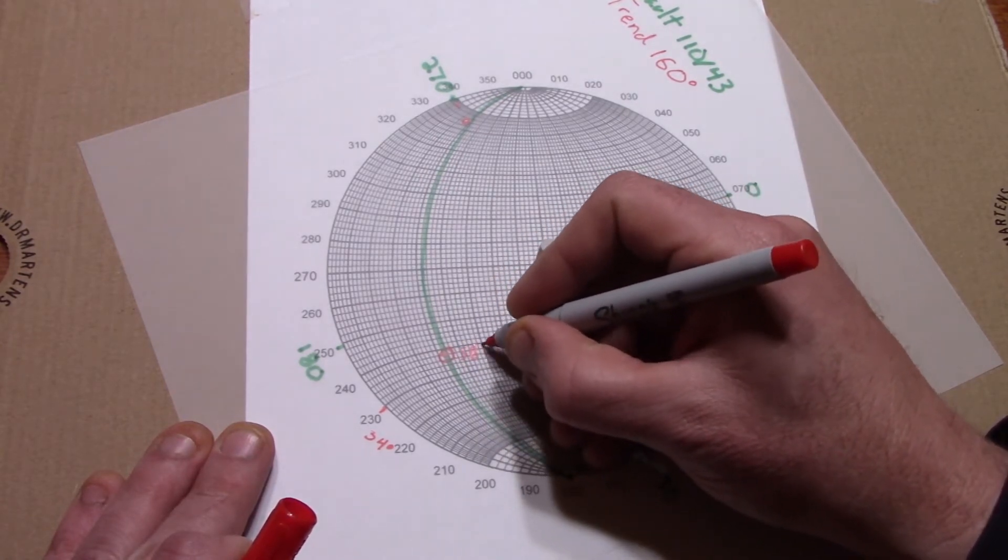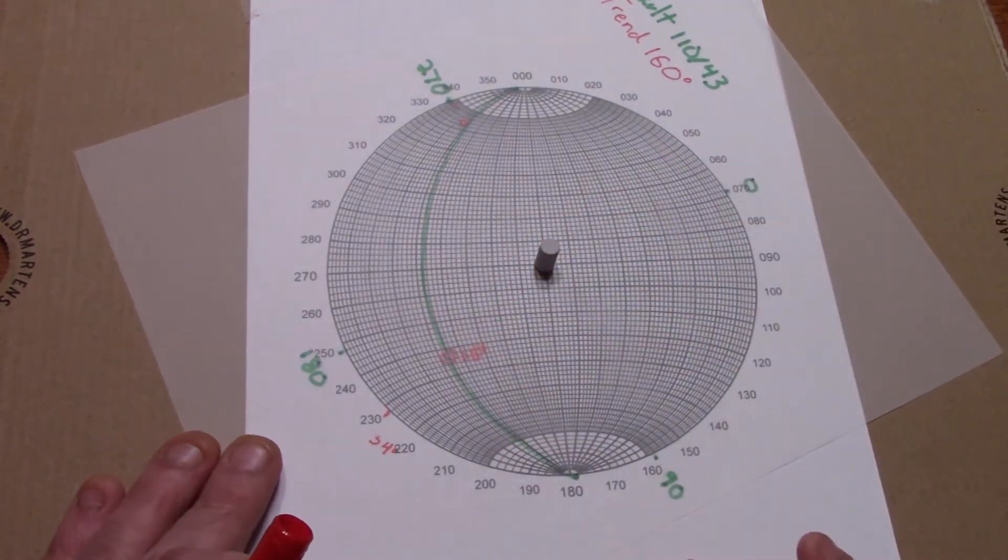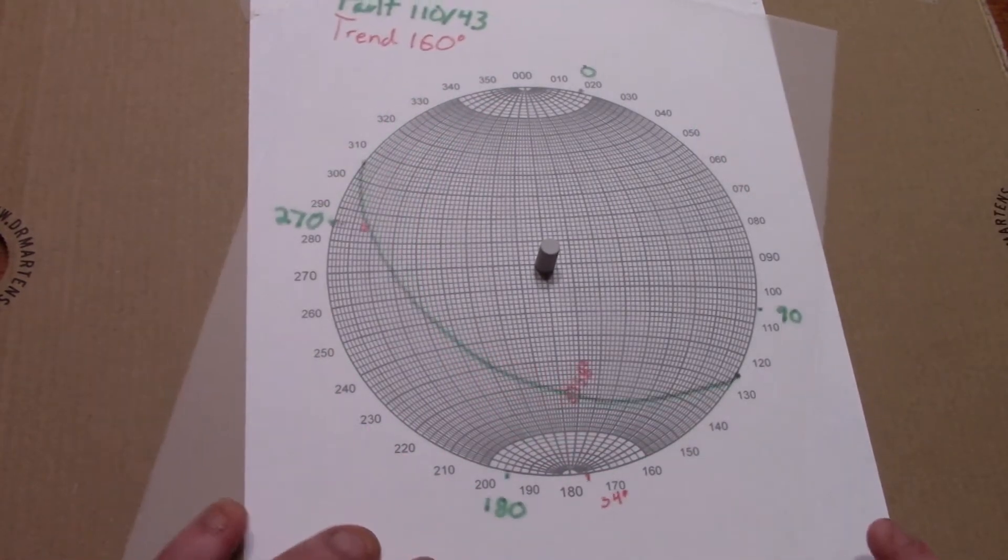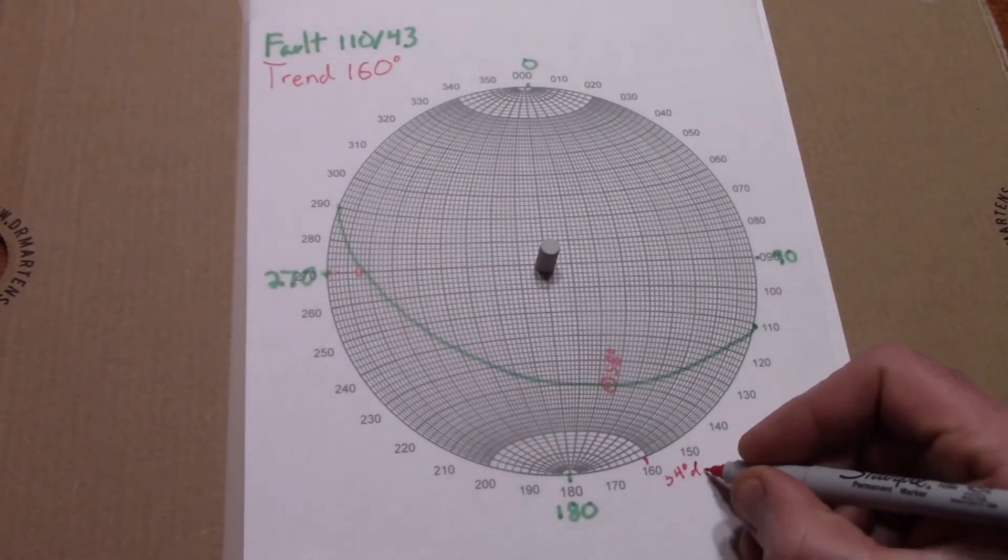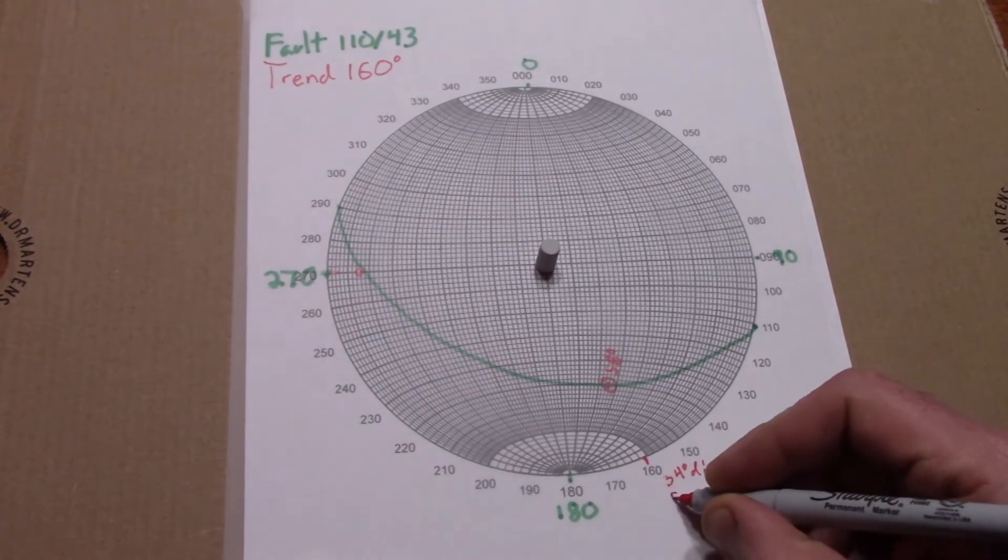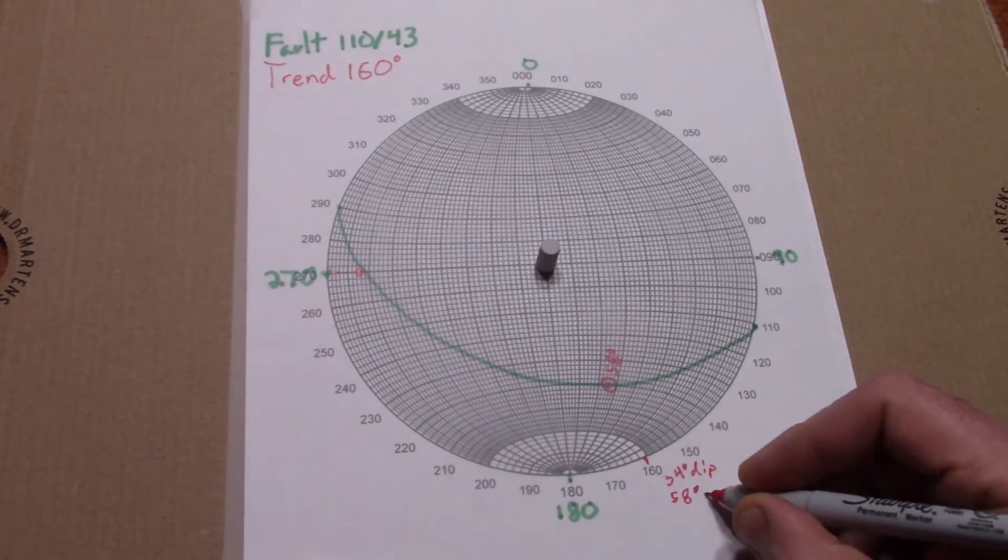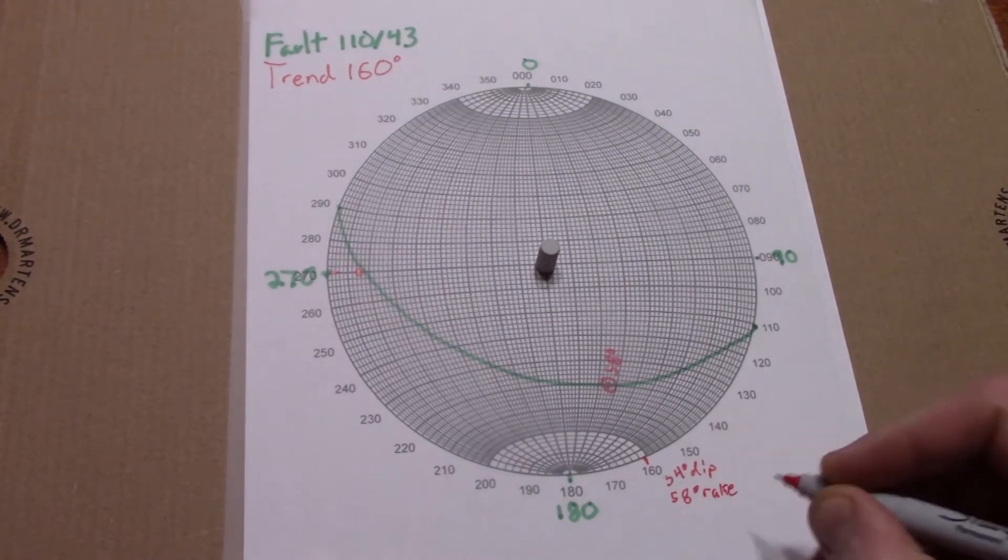Rotate back to proper orientation, and note that our strike is mainly going east-west, and our rake takes the line off to the east, so we can say that the lineation of this plane of 110, 43 rakes at 58 degrees east.